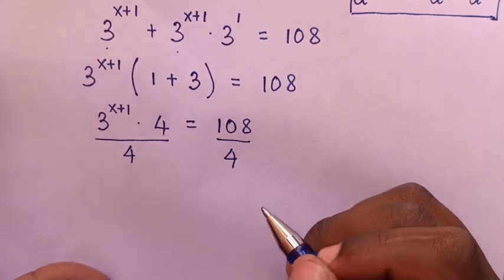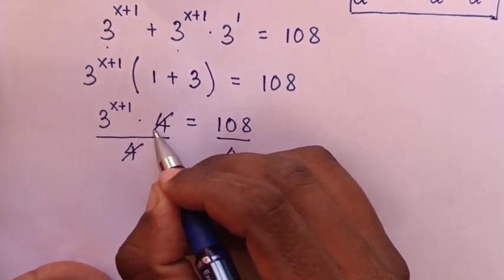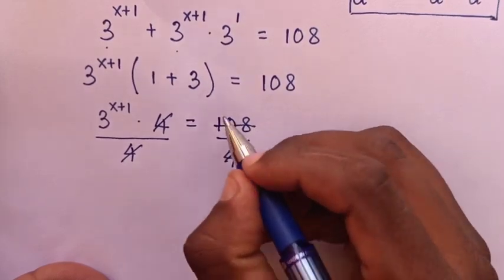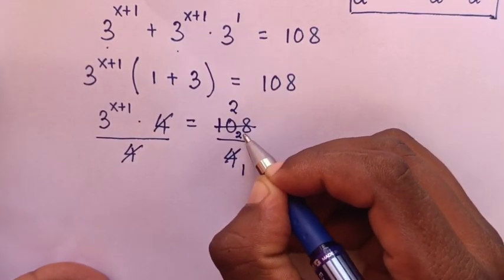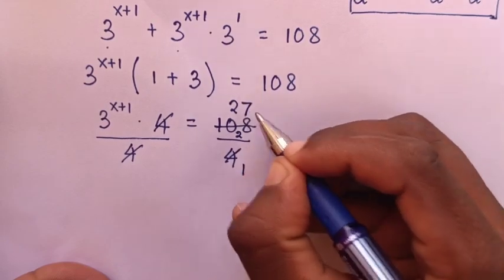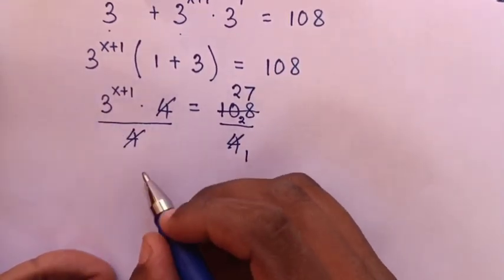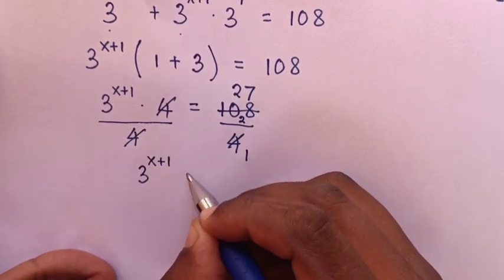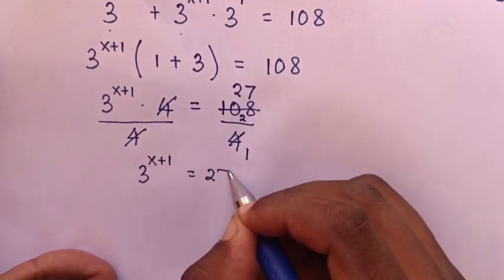Then to simplify, here 4 will cancel. Then here 4 will divide here by 1, here by 2, it will be 8. So it will remain 2. 28 divided by 4 is 7. So our equation will be this 3 power x plus 1 is equal to this 27.